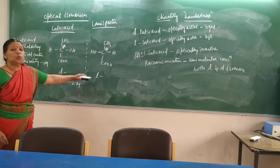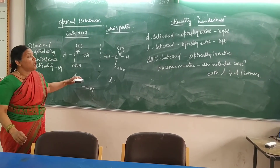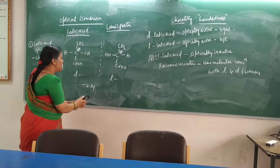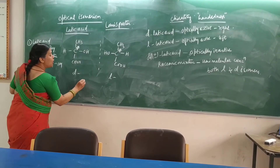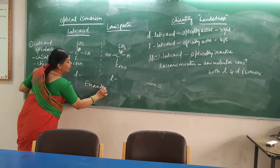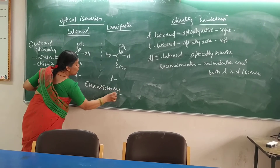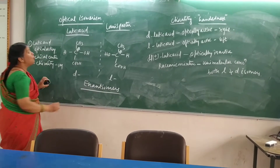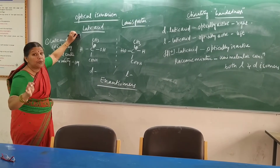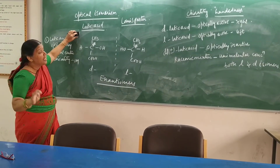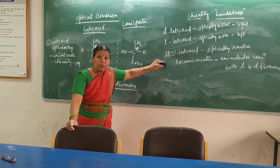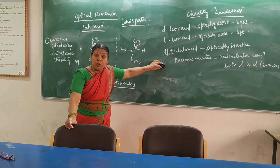These non-superimposable mirror images — the D and L forms — are given a special name. We are going to call them enantiomers. All the optically active isomers which are non-superimposable mirror images are called enantiomers.